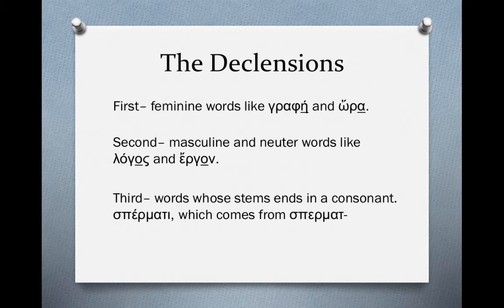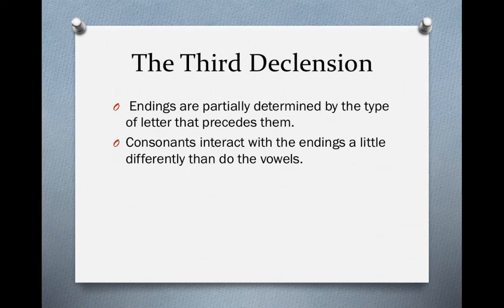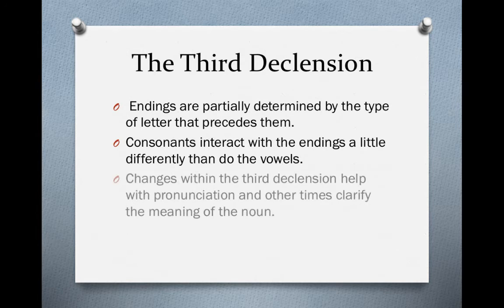This makes sperma a third declension word. Endings are partially determined by the type of letter that precedes them. The third declension endings are sometimes the same as those we've already learned, and sometimes different, because a consonant preceding the ending affects what that ending is. Consonants also interact with endings a little differently than vowels do, which further affects what the ending ultimately looks like.